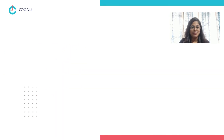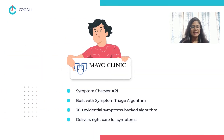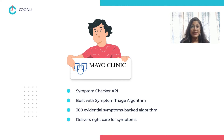Number five: Mayo Clinic API. Mayo Clinic API is a symptom checker API developed using an evidence-based symptom triage algorithm with 300 symptoms and 150 years of medical practice. Hence, it provides the right care for any symptom detected.